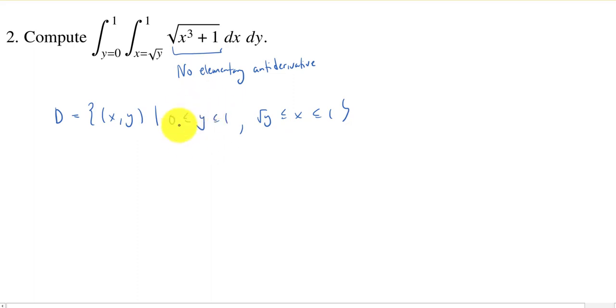Now, since we are given y explicitly and then x is bounded between functions of y, this is what we called a type y region. I think in the book they call this maybe a type 2 region, which I don't really care for, because I can never remember which one is 1 or 2. So I like to stick with the letters.